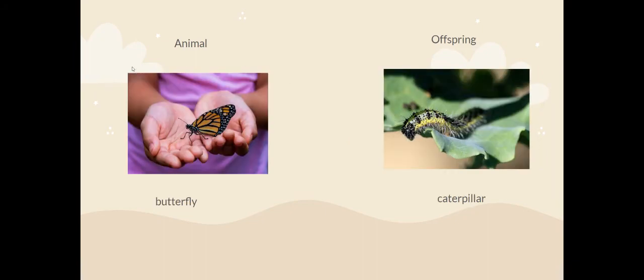A butterfly's offspring is called a caterpillar. This is one of the most different looking offspring that we come across and we may look at it in closer detail later on in the year. I can't see much the same, can you?